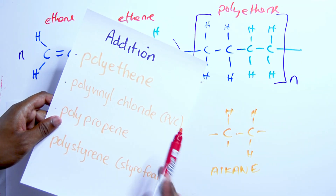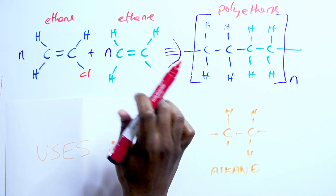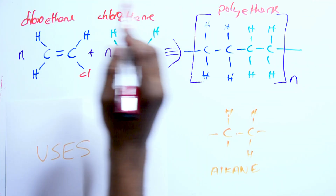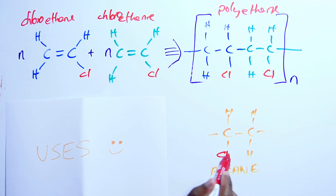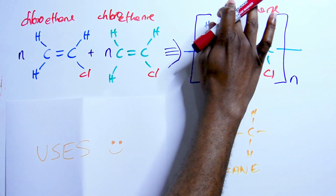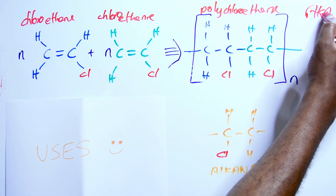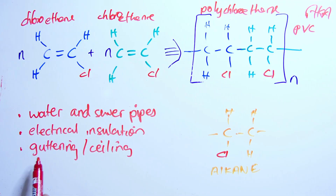The next one on the list is poly(vinyl chloride). Polyvinyl chloride is just ethene with a little chlorine included — we call this chloroethene. We knock out the H and put Cl there — still an alkane linkage — giving us poly(chloroethene). This is also known as polyvinyl chloride, aka PVC. The uses of PVC include water and sewer pipes, electrical insulation, guttering, and PVC ceiling.